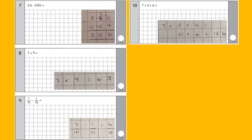And then number 10, which is seven times three times six. So seven times three is 21 and 21 times six is 126.